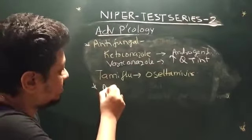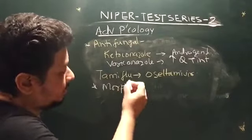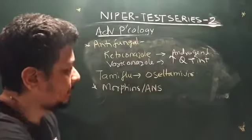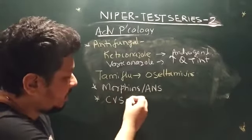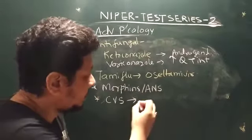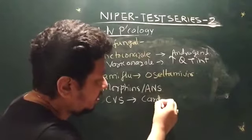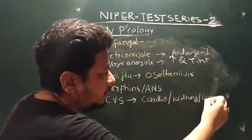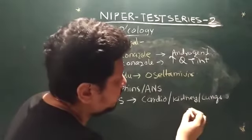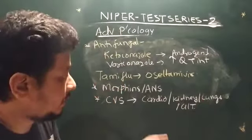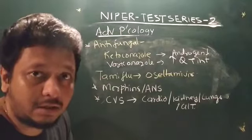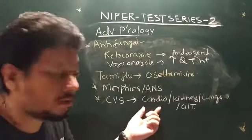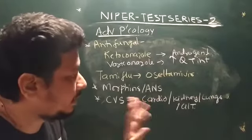Morphine side effects and how they connect to the autonomic nervous system (ANS) are important. Under CVS, the scope includes not just cardiac drugs but also drugs acting on the kidney and lungs. Topics include antiarrhythmic agents, antihypertensives, antianginals, ischemic heart disease, myocardial infarction, and congestive heart failure.